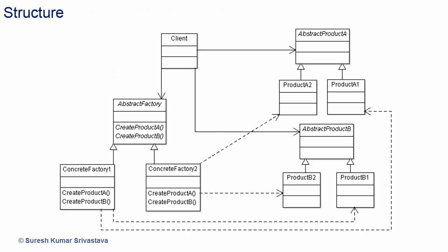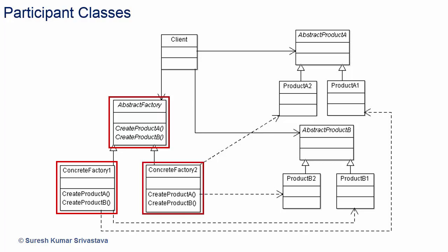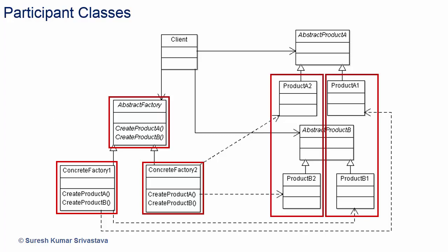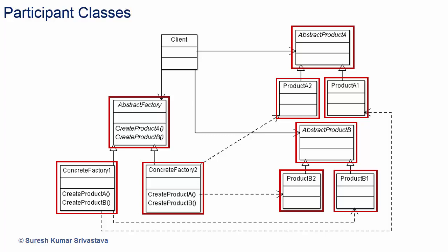Let's see the structure of the Abstract Factory Design Pattern — this gives a good understanding of participant classes, relationships, and how they work together. We have an abstract class Abstract Factory that provides the interface for creating product objects. Concrete factories are derived from Abstract Factory and implement the methods for creating product objects. Each concrete factory represents one family — Concrete Factory 1 creates Series 1 product objects, and Concrete Factory 2 creates Series 2 product objects. Abstract Product A and Abstract Product B provide interfaces for operations on products. Concrete product classes implement those methods. The client or application uses the factory and the products.